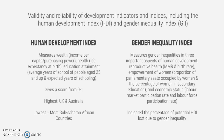The Gender Inequality Index measures gender inequalities in three important aspects of human development: reproductive health through maternal mortality rate and birth rate; empowerment of women through the proportion of parliamentary seats occupied by women and the percentage of women in secondary education; and economic status through labor market and labor force participation rates. It indicates the percentage of potential HDI loss due to gender inequality.